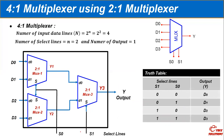Now let us connect the second binary combination: S1=0 and S0=1. When S0 is 1, the output of multiplexer one is connected to D1, and the output of multiplexer two is connected to D3. Because the selection line of multiplexer three is 0, Y3 is connected to Y1, and therefore D1 is directly connected to the output — giving us D1, as shown in the truth table.